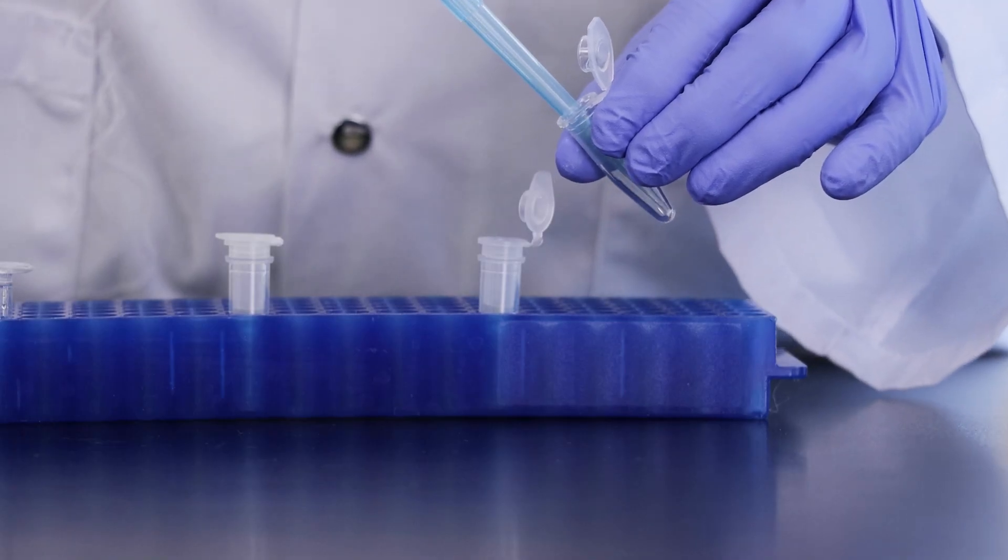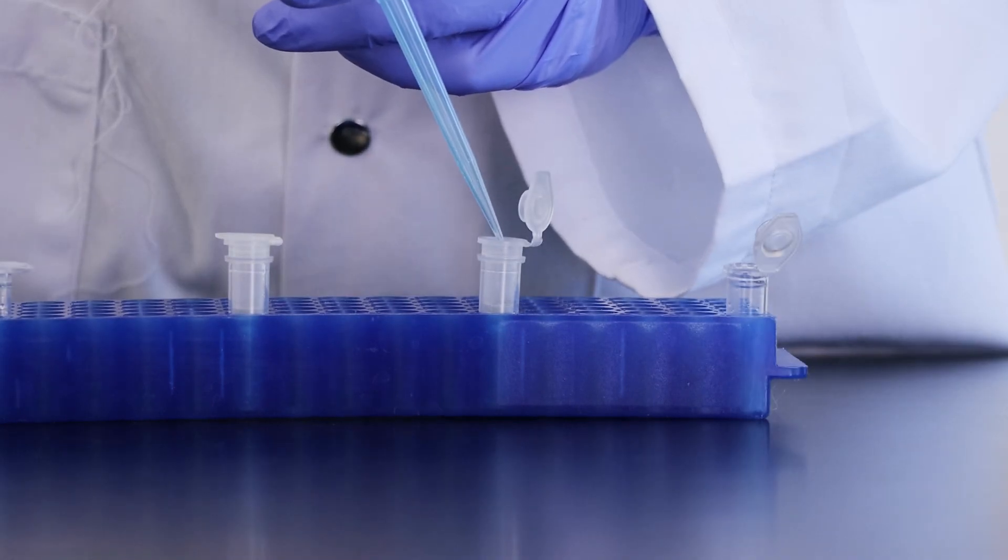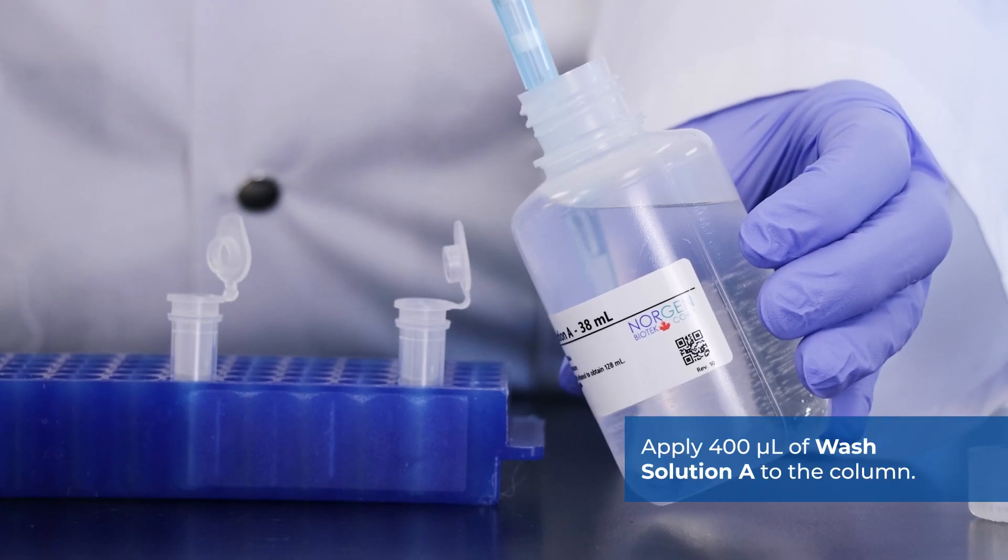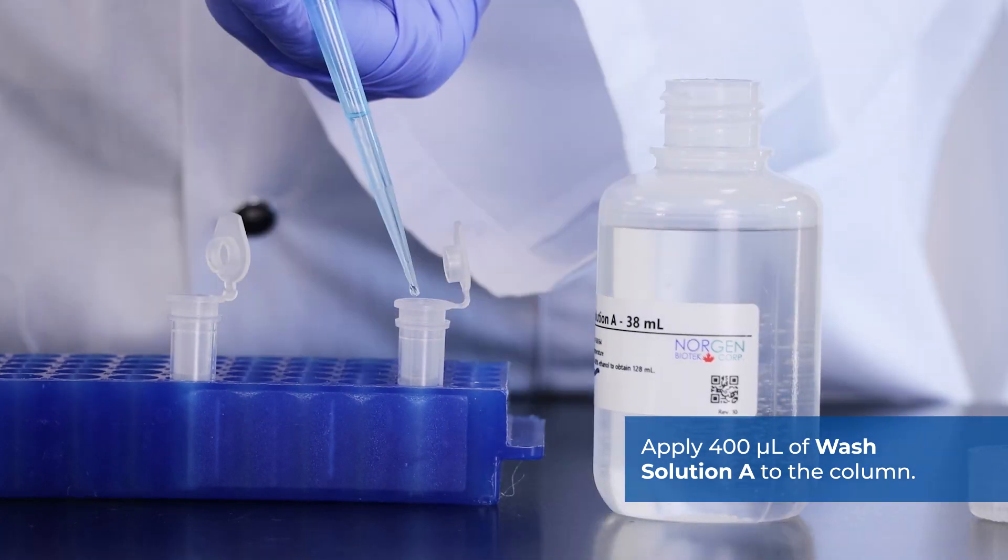Depending on your lysate volume, repeat until the desired volume is reached. Apply 400 microliters of wash solution A to the column.